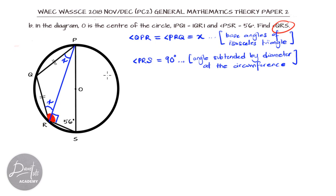Now, we have gotten PRS to be 90, and then we have PRQ to be X. Our QRS that we are asked to find, from the diagram, we can see that it will amount to X plus 90 degrees. So, our task has been simplified to finding the value of X, because we know 90 already.